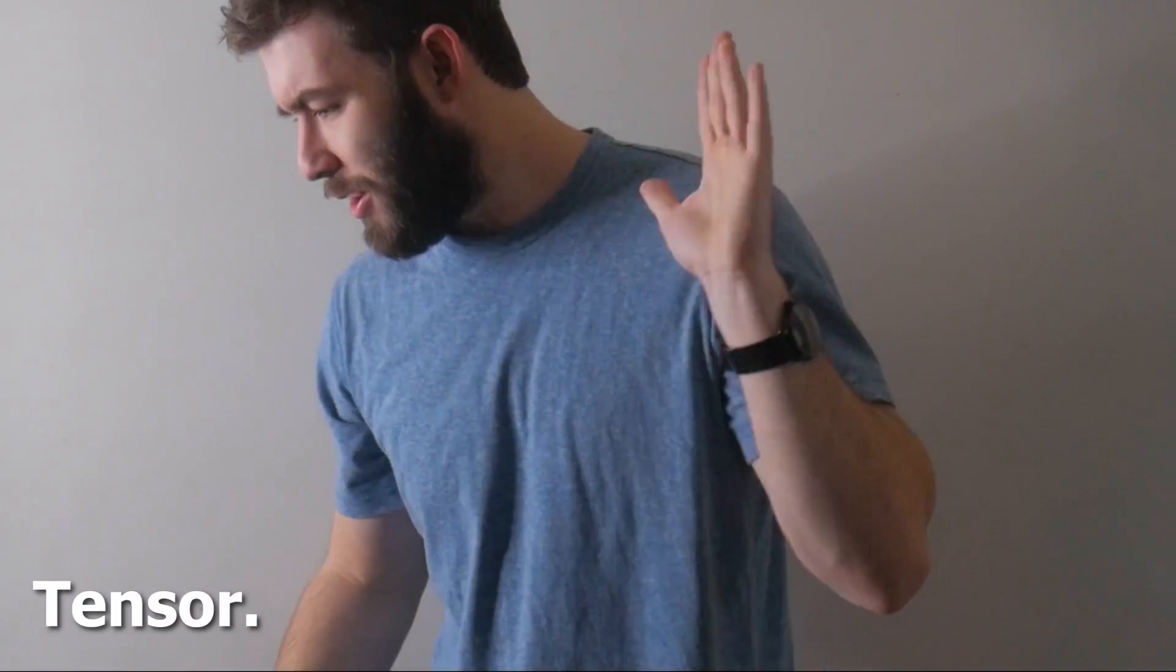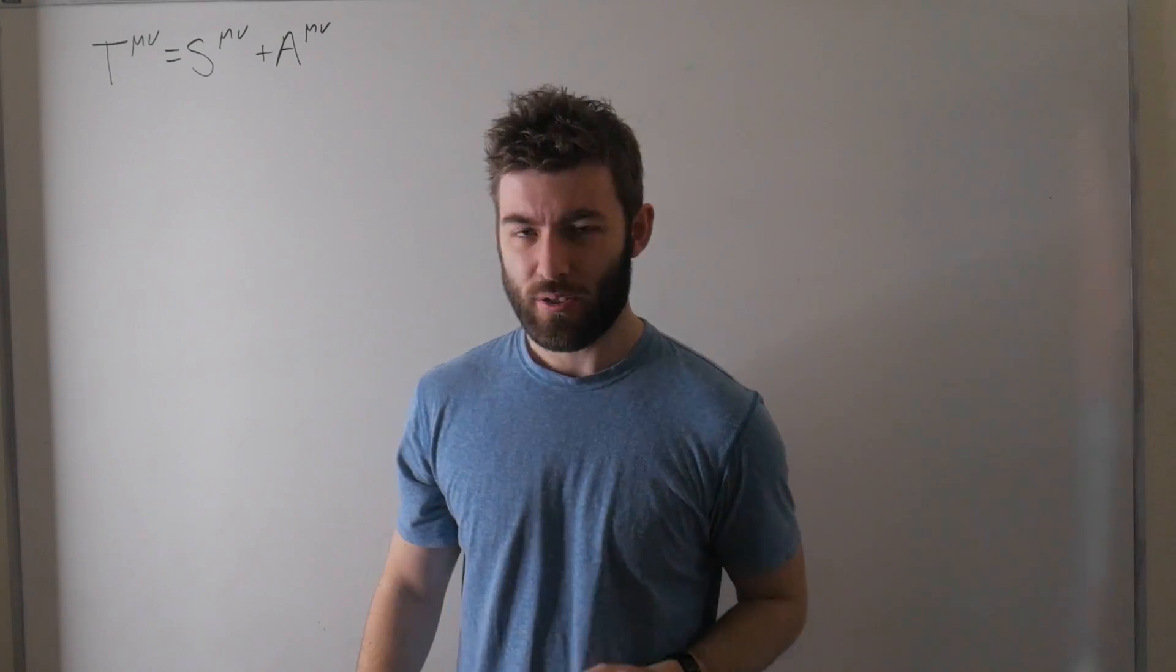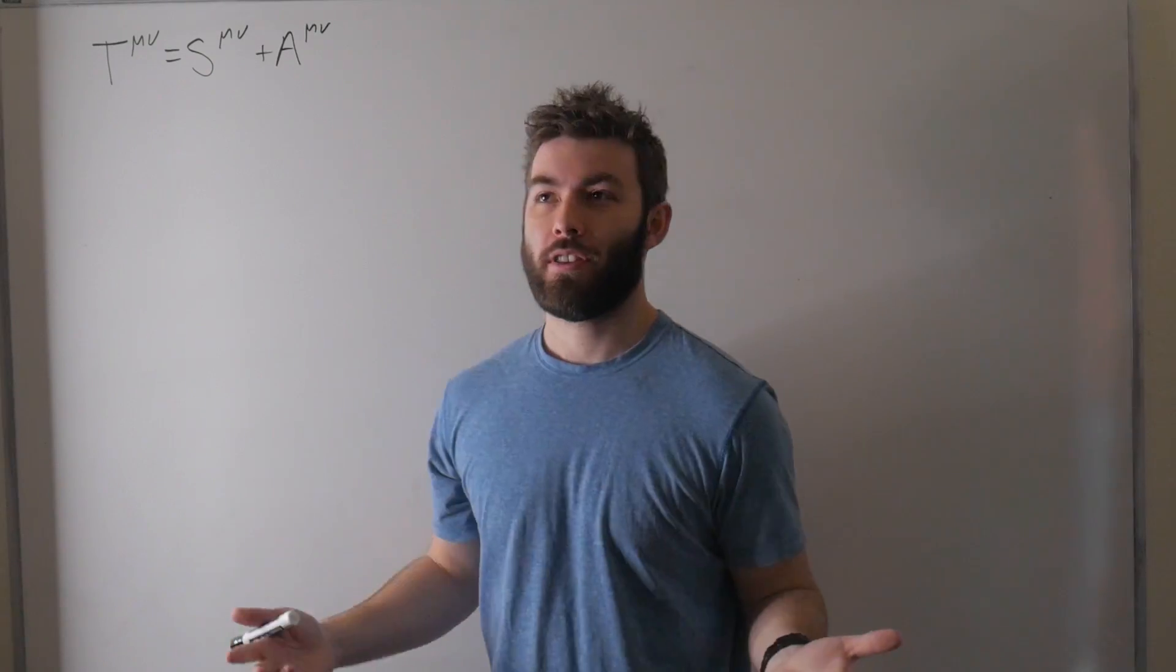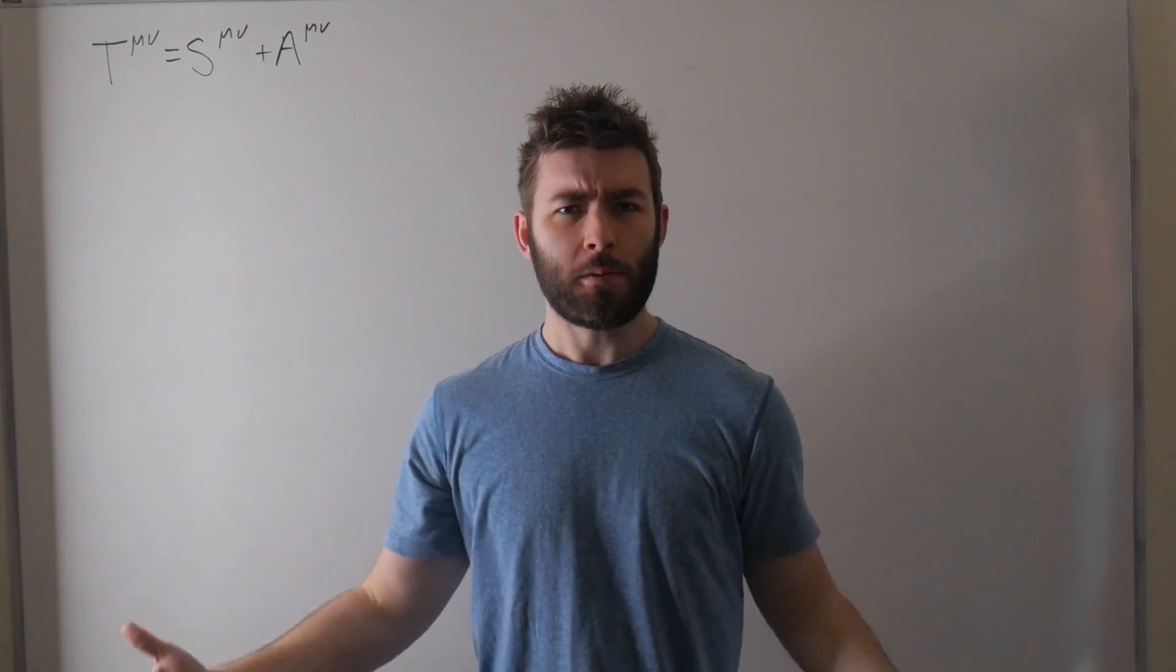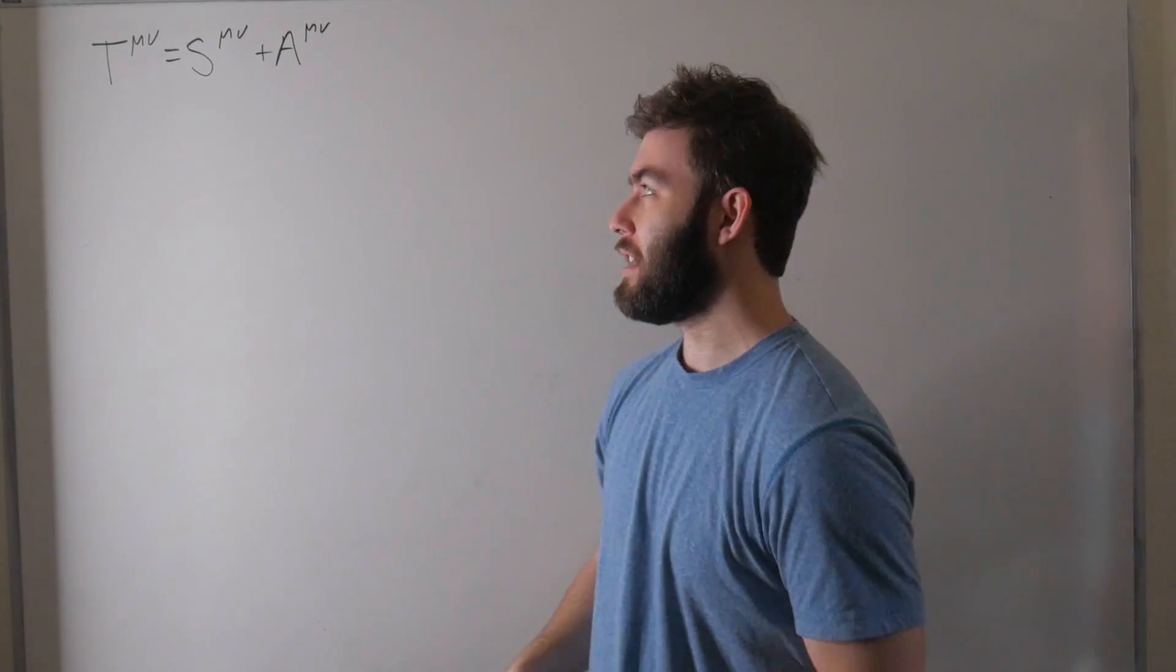What's going on smart people? It is tensor time! In the last tensor calculus for physics video, I mentioned that any arbitrary second-ranked tensor can be expressed as the sum of a symmetric tensor and an antisymmetric tensor. And that's what we're going to be proving today. Let's just jump right into it.